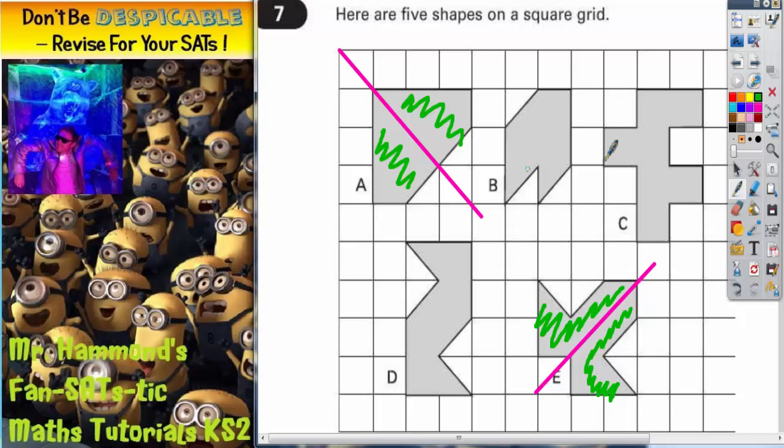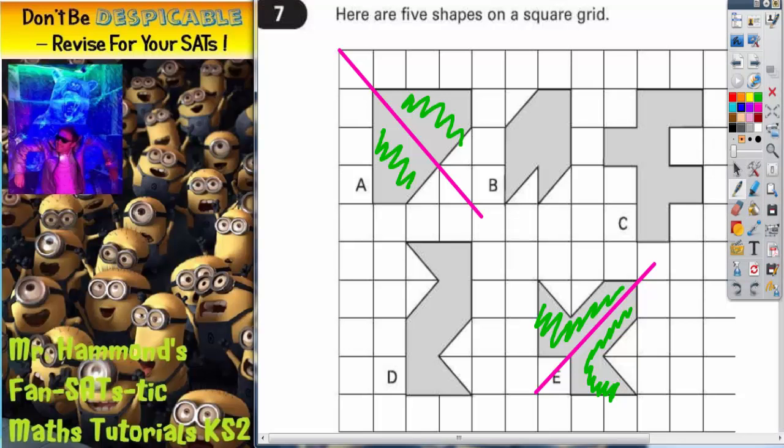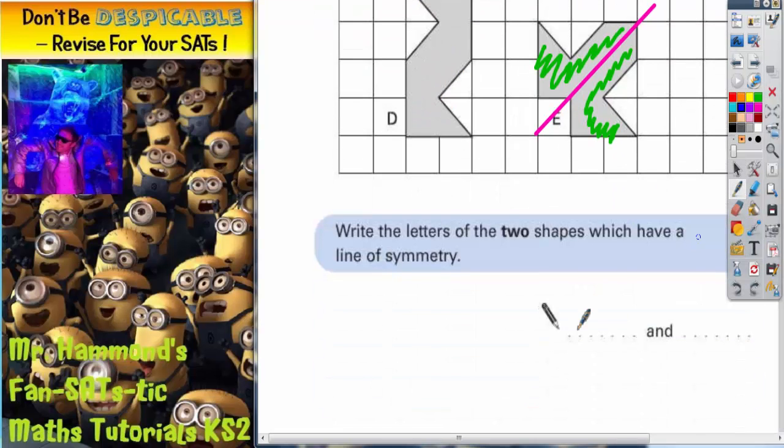Any other shape that you try with a line of symmetry would not work, because the two halves would not fold over and fit. So the two answers that you need to be writing are A and E.